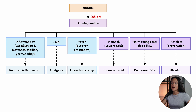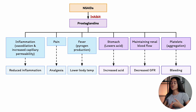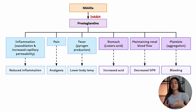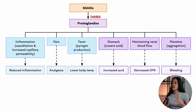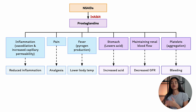NSAIDs are very commonly used and can be found both as prescription medications and over-the-counter remedies. Most people likely have an NSAID like ibuprofen or aspirin in their home. There are lots of different individual NSAIDs and they are quite diverse in terms of their chemistry, but what they have in common is their similar therapeutic effects because of their mechanism of action.